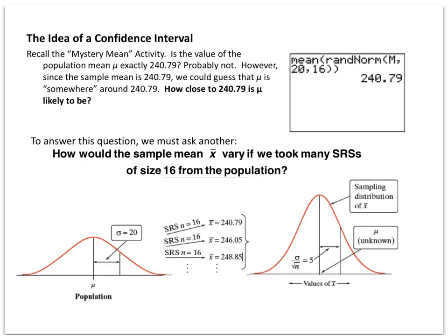16, meaning that for that mean of μ with a standard deviation of 20, you took a sample of 16 and you found the average of all 16 of those numbers. We're using that as a way to predict what the mystery mean was. So in this case, if I were to do this, I would get the number 240.79 as my prediction for what the mystery mean was.